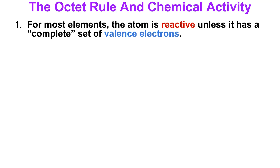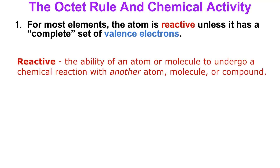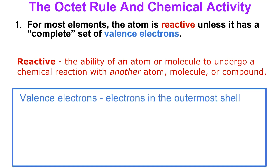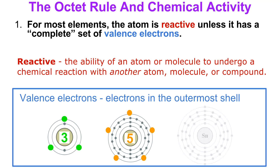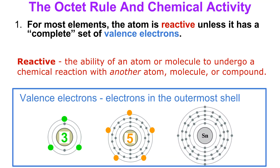Reactive means the ability of an atom or molecule to undergo chemical reaction with another atom, molecule, or compound. Reviewing valence electrons: these are the electrons in the outermost energy level or outermost shell. So even though an element may have five total electrons, if I count the valence electrons it has three. Another element may have lots of electrons but only five valence electrons — or four valence electrons — the electrons in the outermost shell.